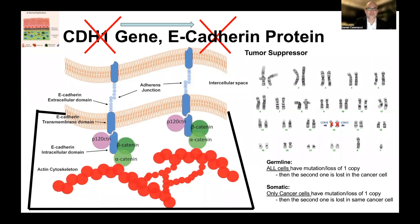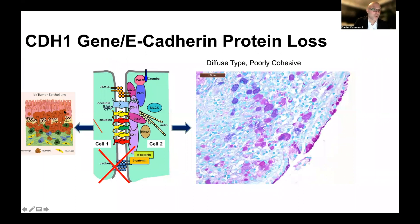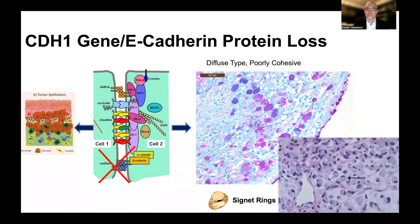CDH1 is a tumor suppressor gene, and E-cadherin is a tumor suppressor protein, because it functions to keep cells together. In this schema, there are many proteins that help keep cells together, but E-cadherin is a common and important one. If you lose this protein, you get loss of cell cohesion and cells can move around. Specifically in diffuse-type gastric cancer, which is notoriously poorly cohesive, each cell detaches from others and can disperse throughout the stomach wall. A specific cell type seen in this cancer is called a signet ring cell — named by pathologists because they resemble a signet ring — and this is a subtype of diffuse-type poorly cohesive gastric cancer.